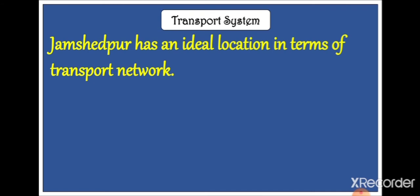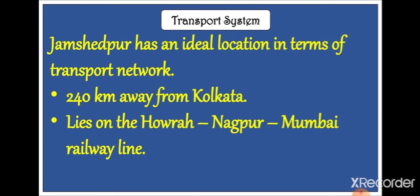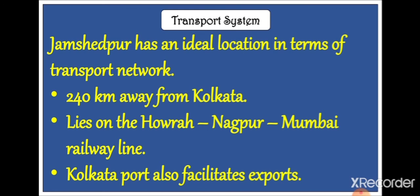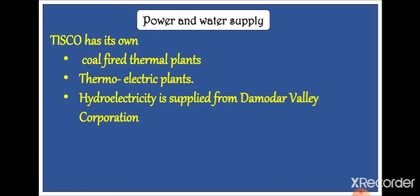Next is the transport system. This place has an ideal location in terms of transport network. As shown in the previous picture, this place has a good network of roadways and is also connected by railways. This place is located just 240 kilometres away from Kolkata and lies on the railway line connecting Howrah, Nagpur, and Mumbai. With the help of railways, manufactured goods are transported to various places, and the Kolkata port also facilitates exports.